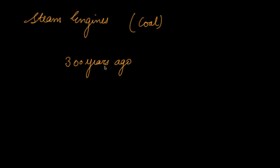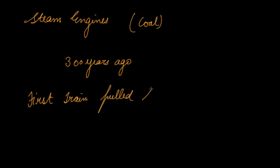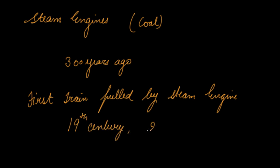The first train pulled by a steam engine was built in the 19th century, about 200 years ago. At the same time, ships also started using steam engines, giving us faster means of transport. All of this transport has motion attached to it — they are moving and crossing still objects, and that is motion.